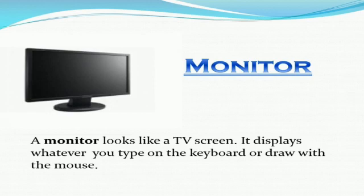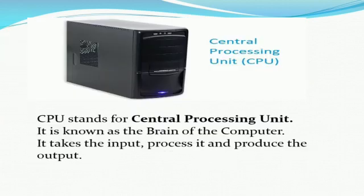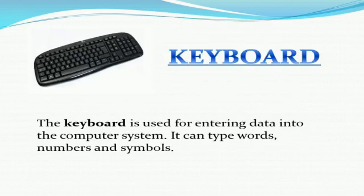Second is the CPU, that is the Central Processing Unit. It is also called the brain of the computer. It takes the input, processes it, and produces the result on the monitor screen. Next is the keyboard — the keyboard is used for entering letters, numbers, symbols, and text into the computer system, which is displayed on the monitor screen.